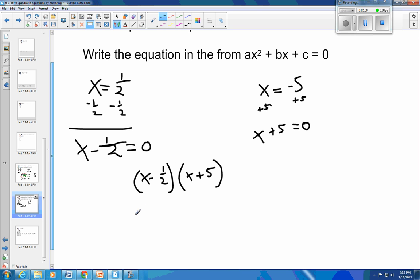Foil. So x times x is x squared. x times 5 is 5x. 1 half times x is minus 1 half x. And 1 half of 5 is minus 5 halves.